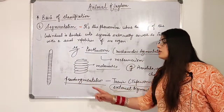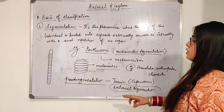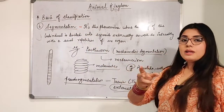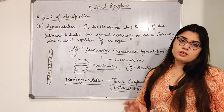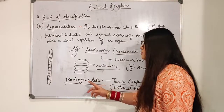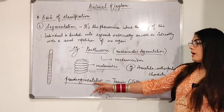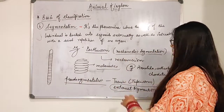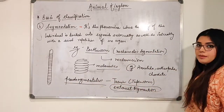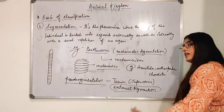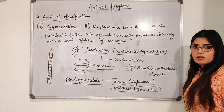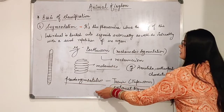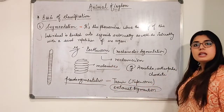Pseudo-segmentation means false segmentation. Usually, segmentation means the segments are present internally as well as externally. But in pseudo-segmentation, as in the example of Taenia, the body is divided only externally — there are no internal segments. That is why it comes under the example of pseudo-segmentation.